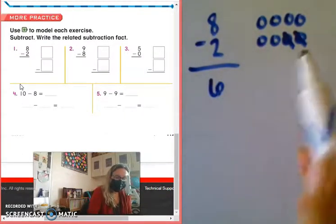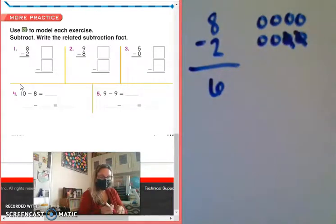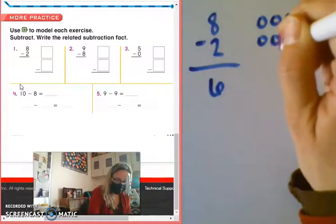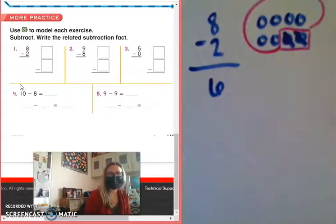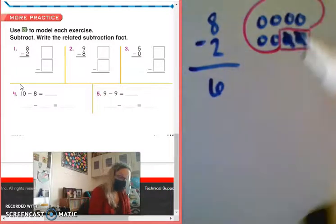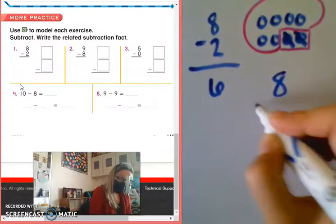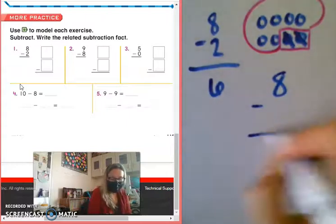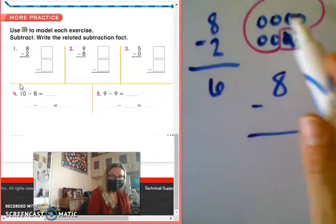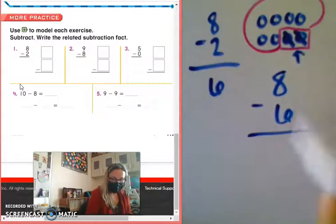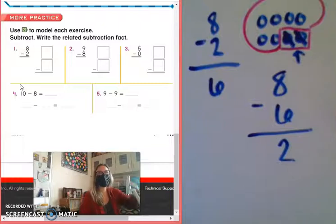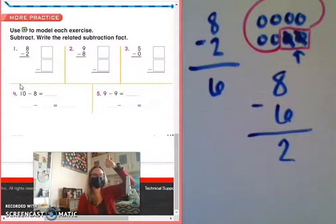So Lillian, my parts now, as you can see here, I have two separate parts. My parts are 2 and 6, right? So now my other subtraction problem, I still have 8 to begin with. I can't change that. What would the flip-flop be? 8 take away 6 equals 2. Beautiful. Thumbs up if that's what you had in your brain. Awesome.